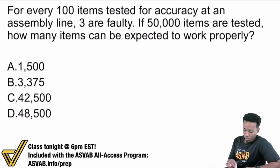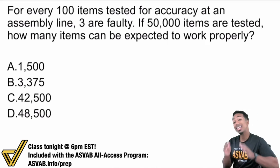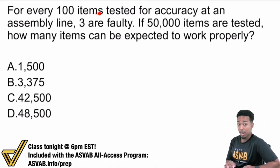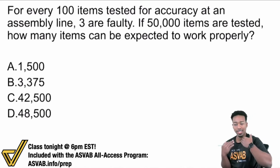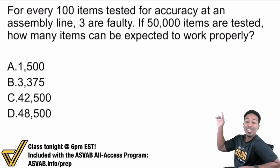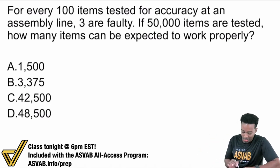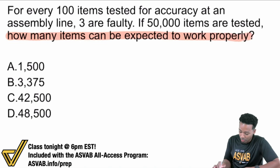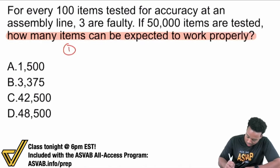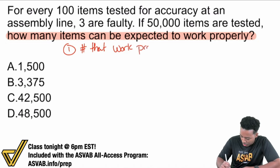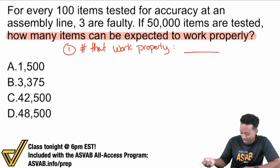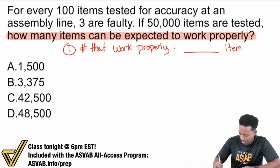My number one rule when it comes to word problems in general is to start with the question. Right here: 'How many items can be expected to work properly?' That's the question. Not 'for every 100 items tested' — no. We have to look at the question first because you want to know what the objective is. You don't want to confuse yourself with information that doesn't matter until you know what it's there for. So start with the question: how many items can be expected to work properly? Your goal is to find the number that work properly — blank items.